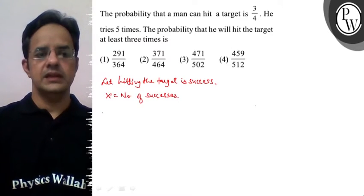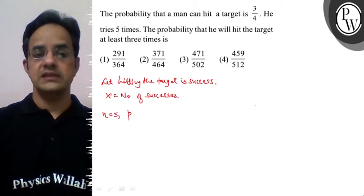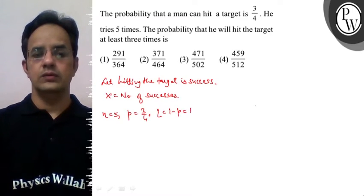We have 5 trials of this experiment. The probability of success is 3/4, and the probability of failure is 1 minus p, which equals 1/4.